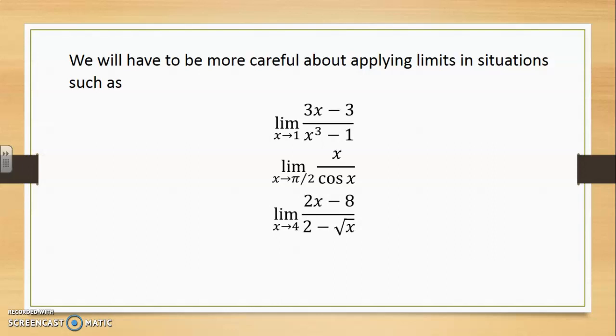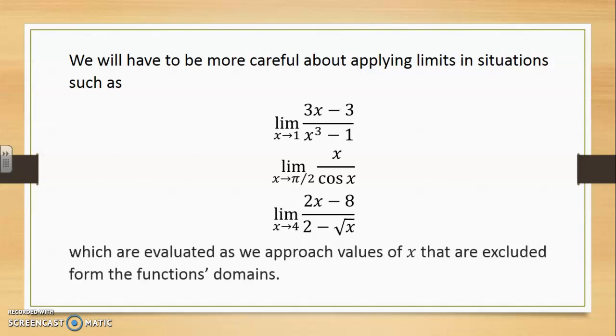As x approaches 4, 2 minus root of x also approaches 0. So in all three of these examples, divisions by 0 are looming in the background and therefore not within the domain, but perhaps at the border of a domain or at a point where a discontinuity may be occurring. We're going to have to approach these values of x in a slightly more delicate way that we're going to see in future videos.